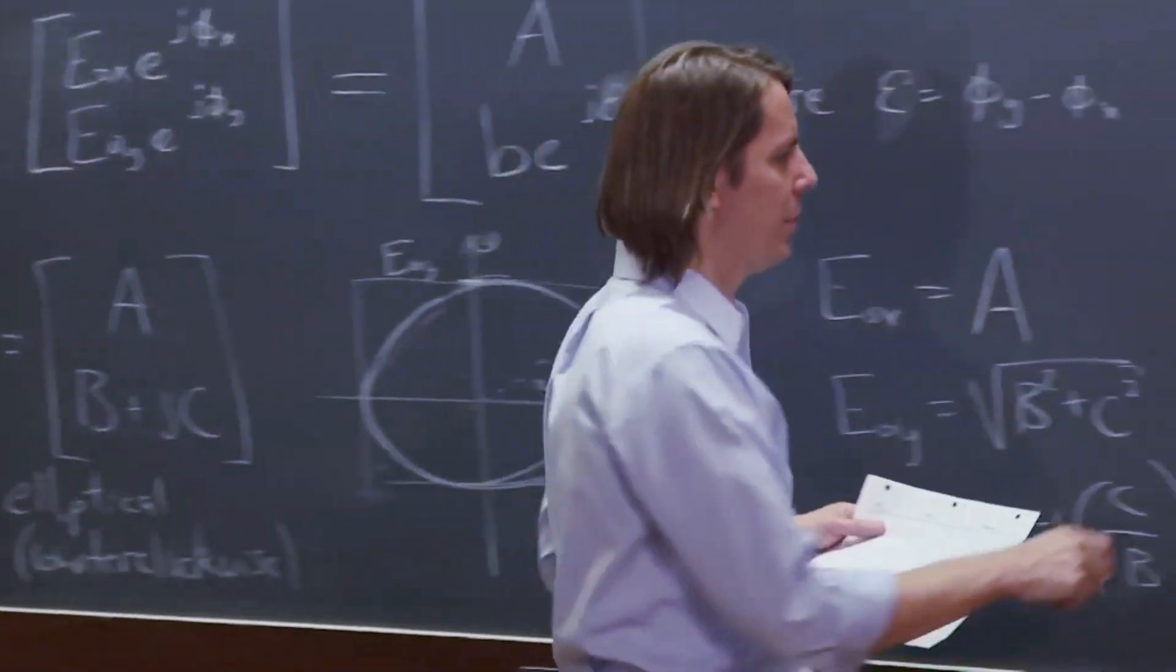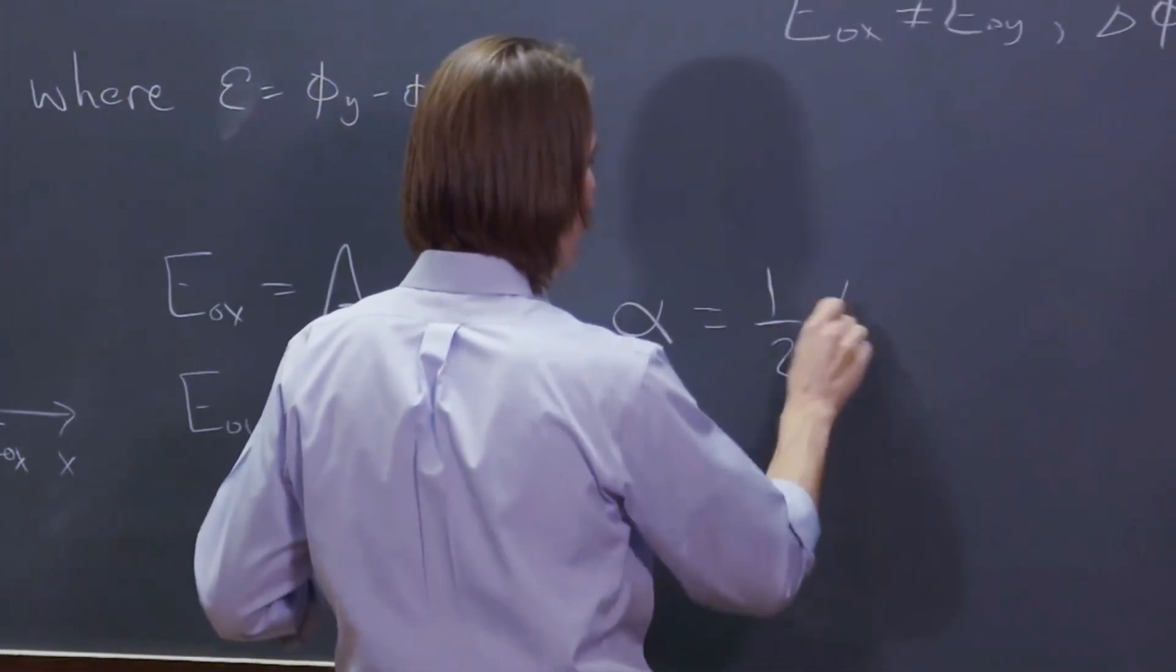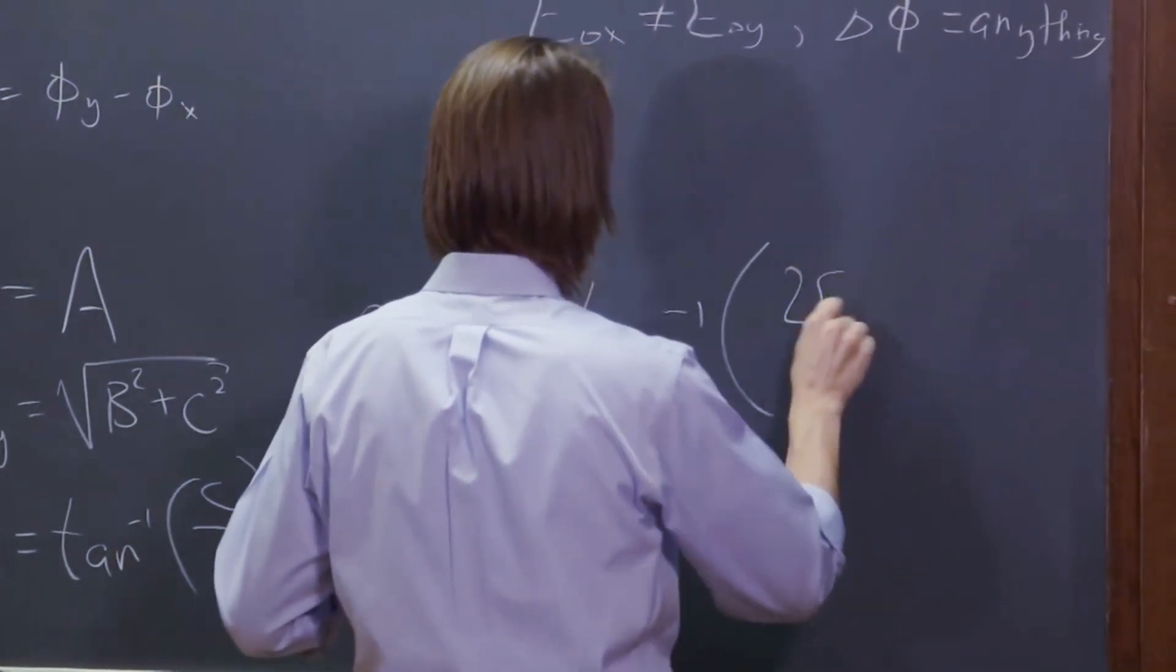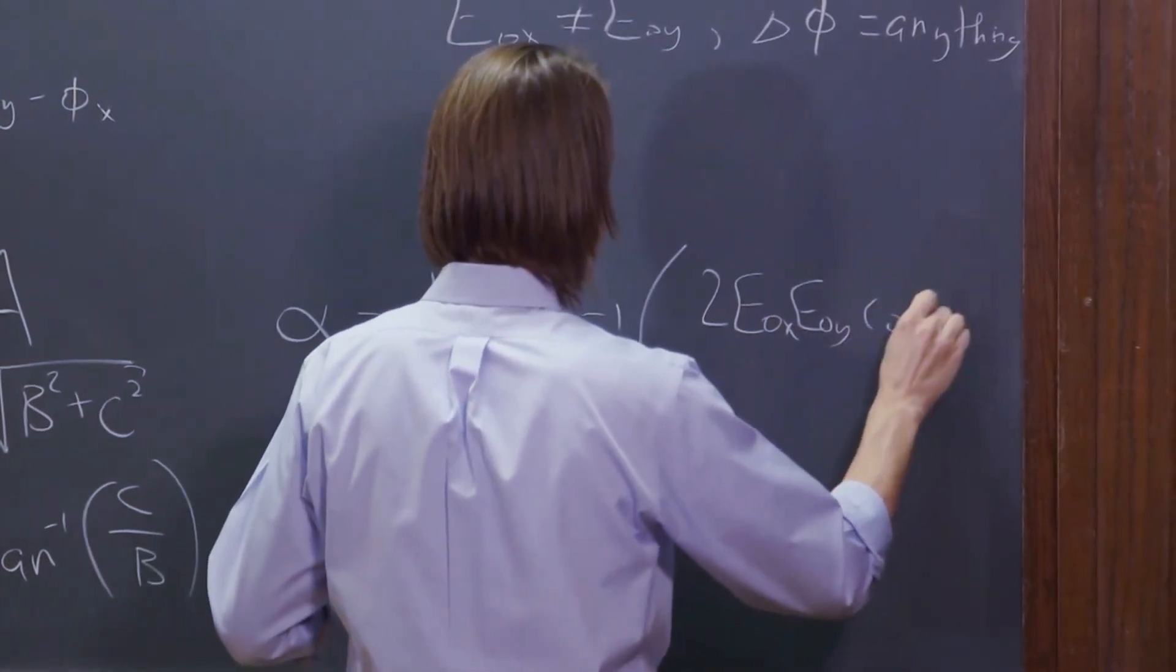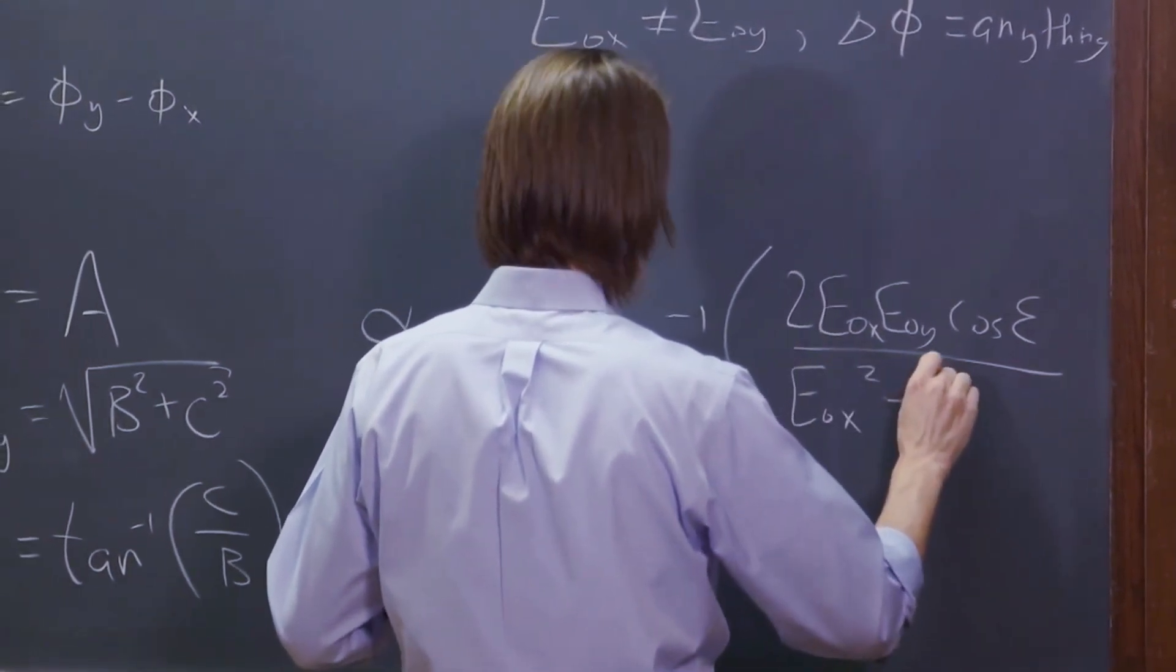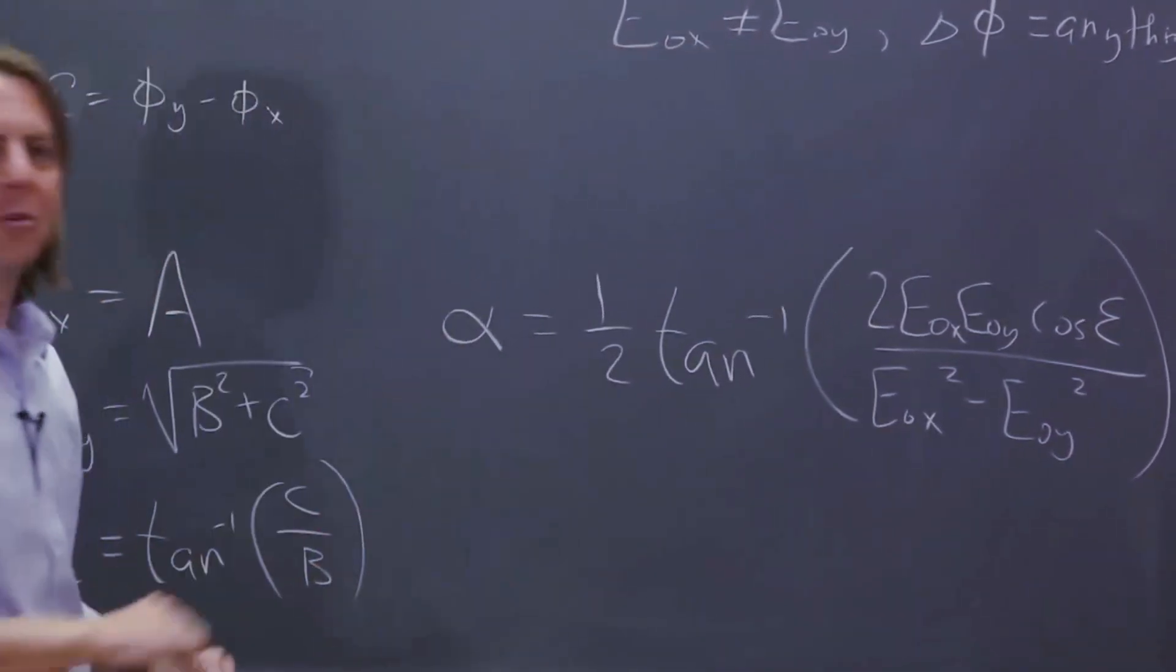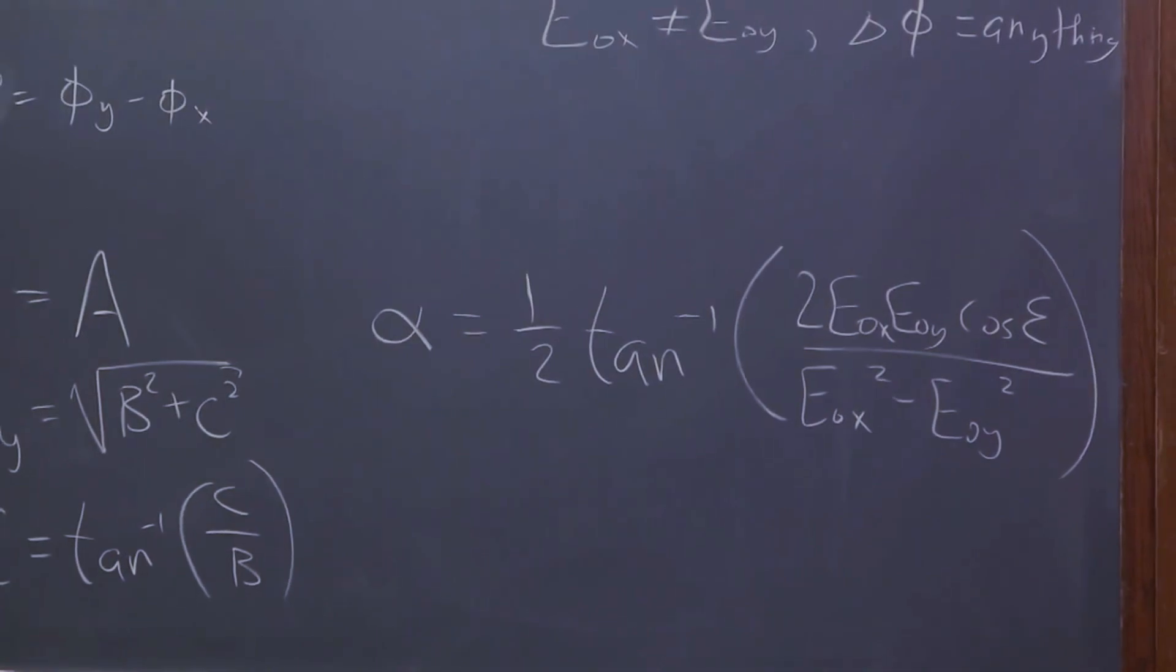And then alpha, this is the hard one. I'm going to pick up my notes and reveal that I do look at notes: it is one half of the inverse tangent of two E not X E not Y cosine of the phase difference over E not X squared minus E not Y squared. And that's the one that's a little hard to get and we don't want to spend our time because it's mostly geometry.